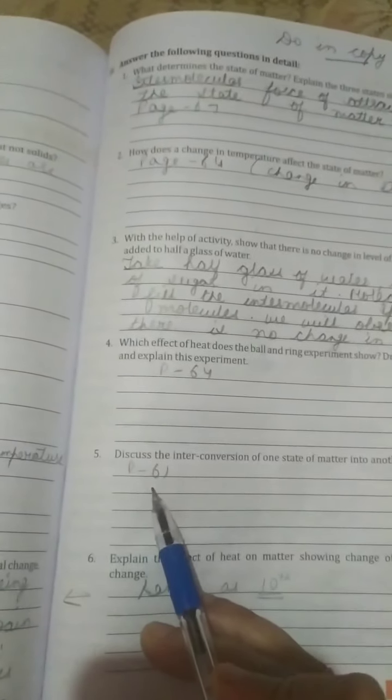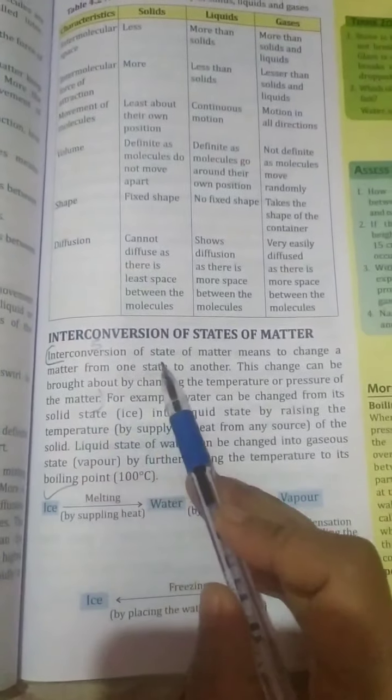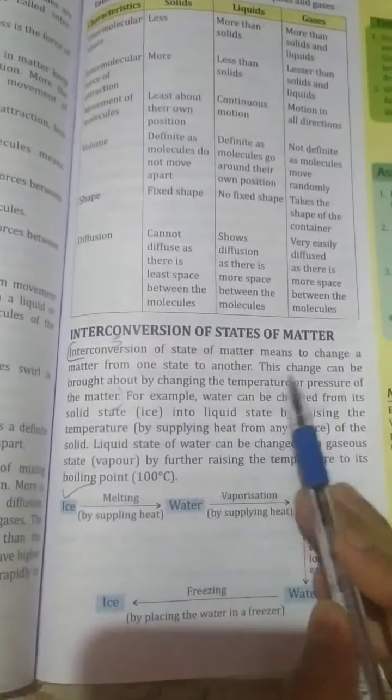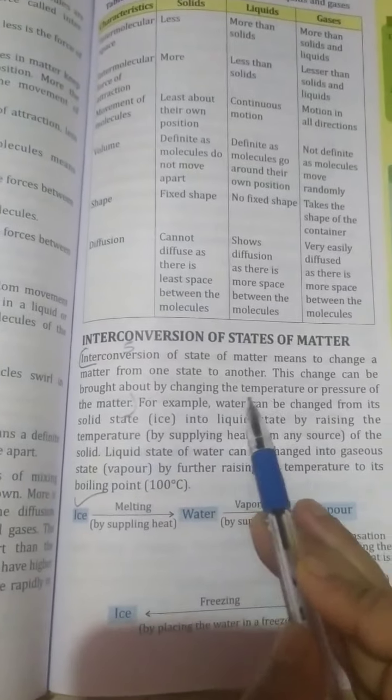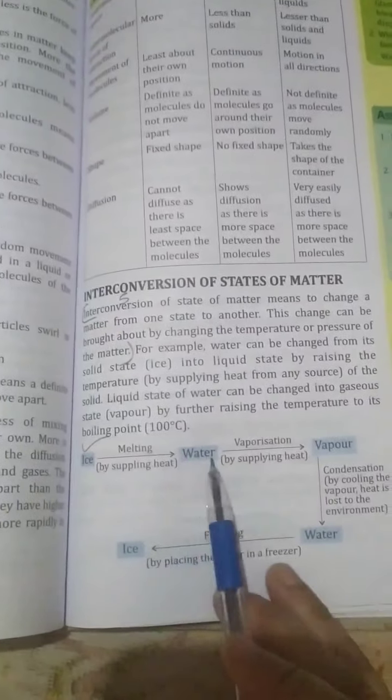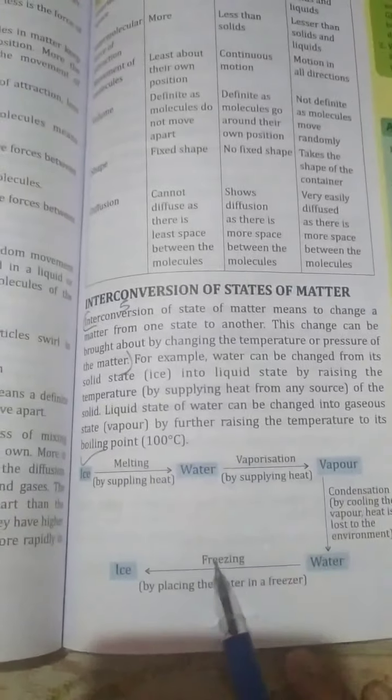Open page number 61. You have to write: interconversion of state of matter means to change a matter from one state to another. This change can be brought about by changing the temperature or pressure of the matter. You have to write down this flow chart: ice, water, vapor, vaporization, condensation, and freezing.